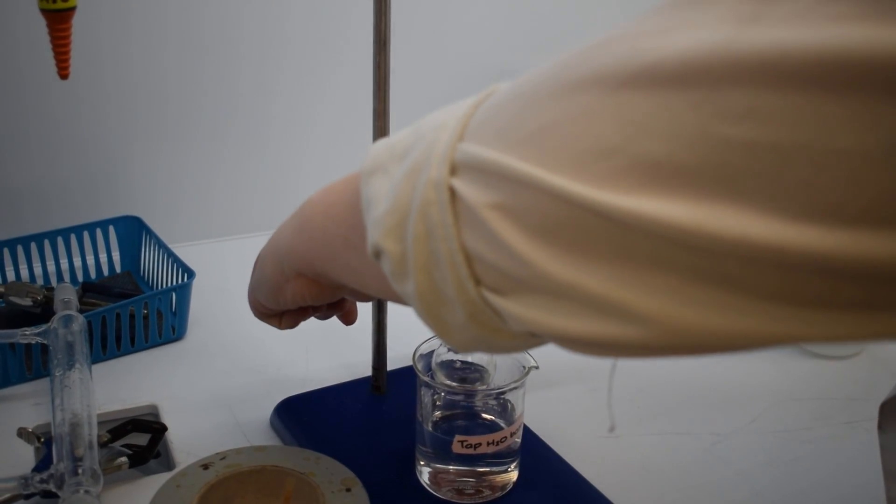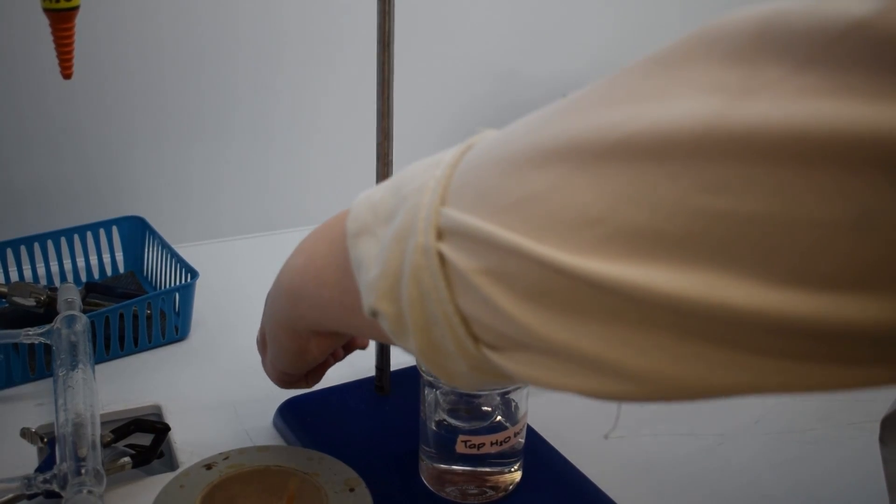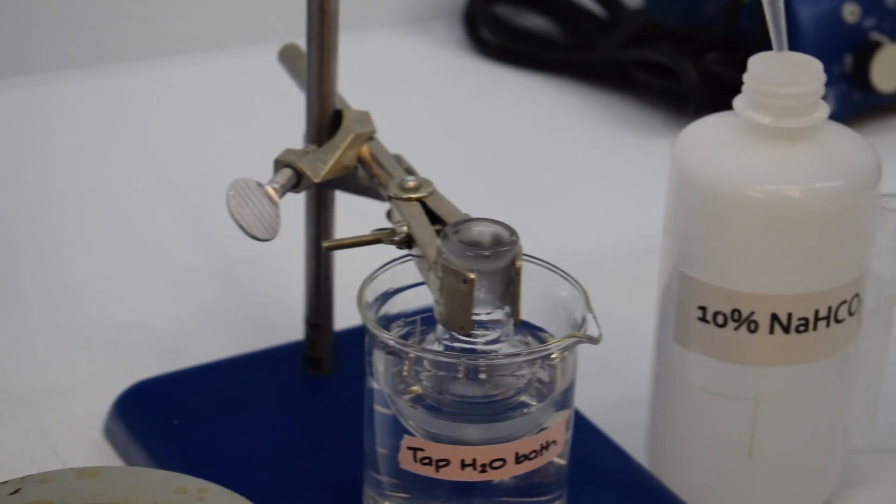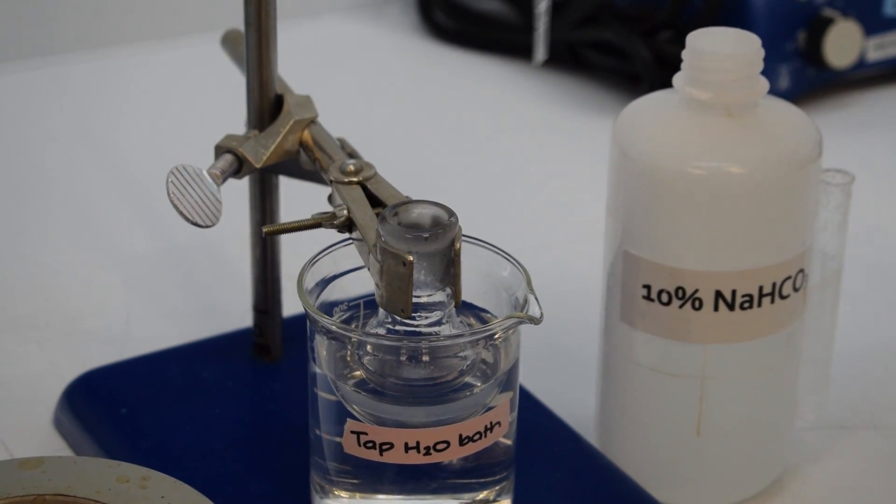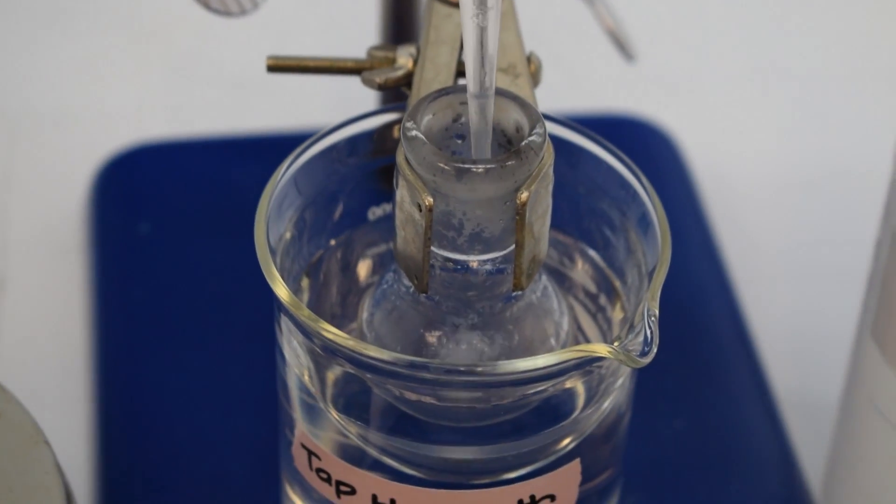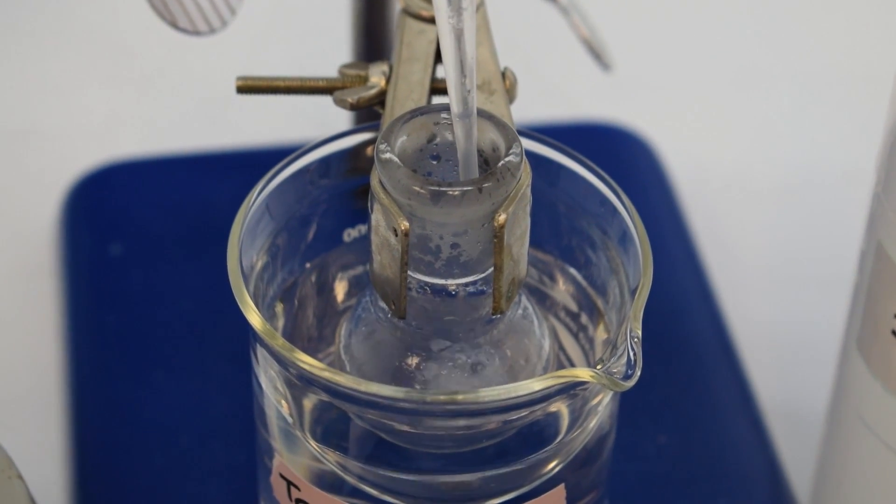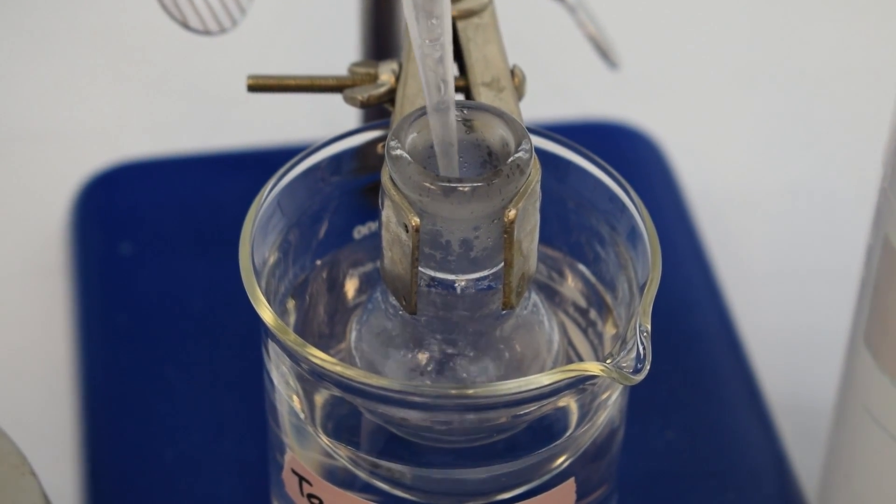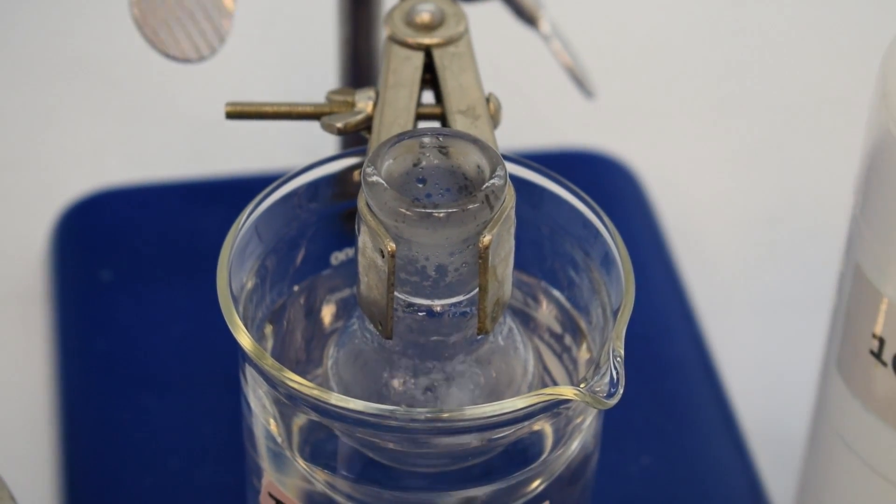Once the reaction mixture is cool, we will begin adding 20 milliliters of sodium bicarbonate to the flask one milliliter at a time. This will neutralize the acid, but it also produces aggressive bubbling, which is why we add it very slowly.